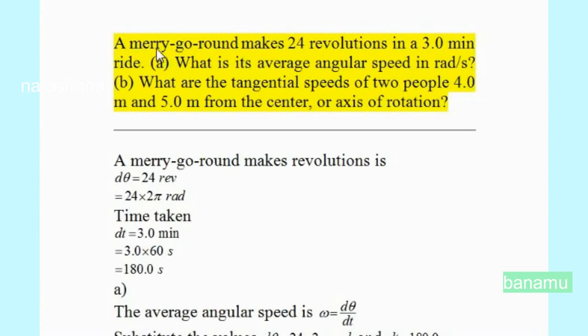A merry-go-round makes 24 revolutions in a 3-minute ride. Part A: What is its average angular speed in radians per second? Part B: What are the tangential speeds of two people at 4 meters and 5 meters from the center or axis of rotation?